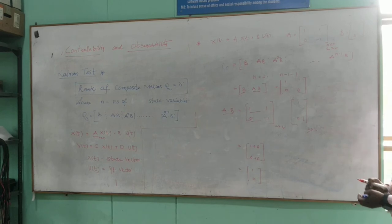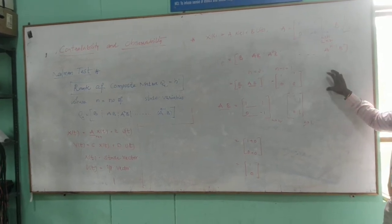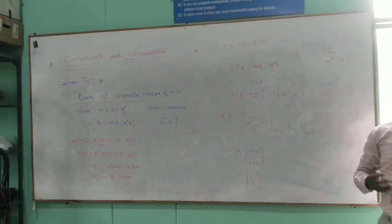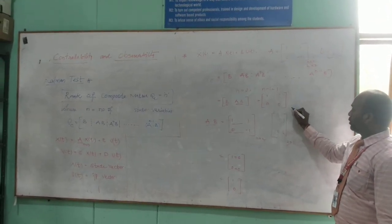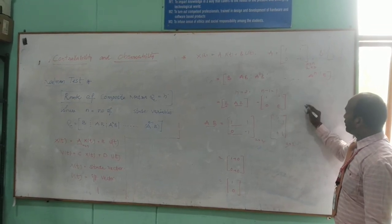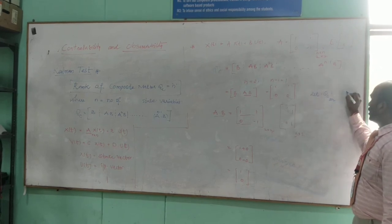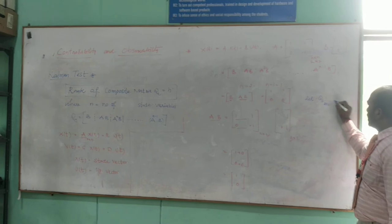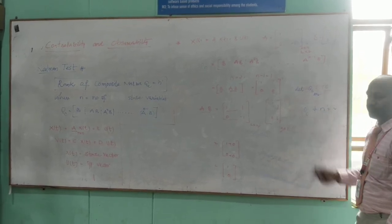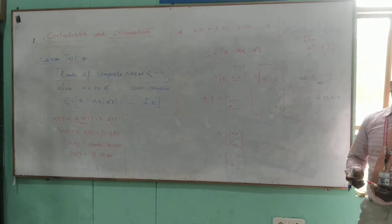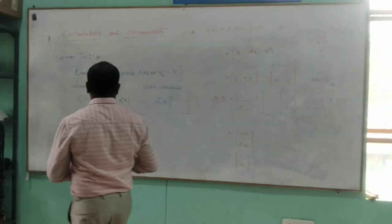Now let us find the rank of the composite matrix. To find the rank, we start with the highest order and compute the determinant. If the determinant is not zero, the rank equals that order. For this 2×2 composite matrix, the determinant is 1×0 − 0×1 = 0. Since the determinant is 0, the rank of Qc is not equal to N = 2. Therefore, this system is not controllable.